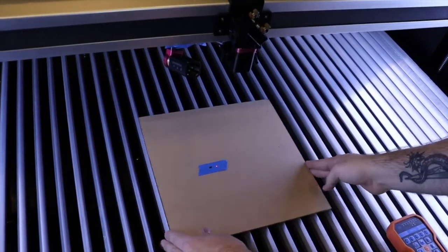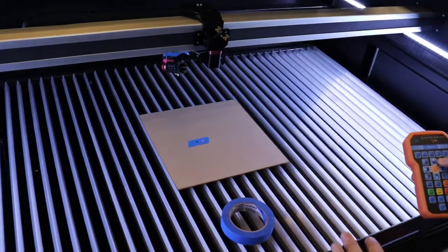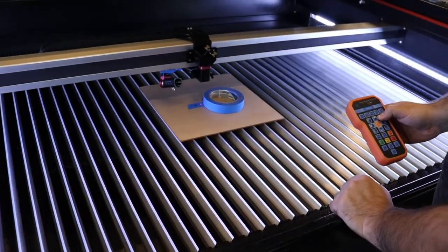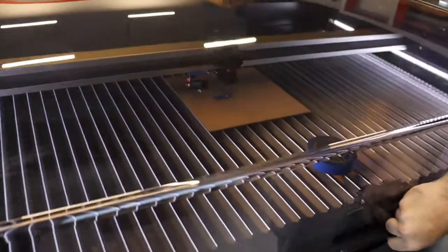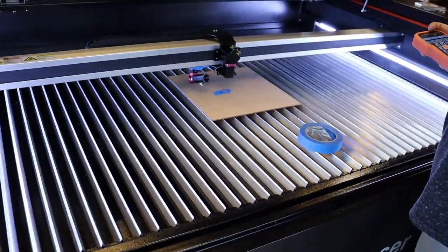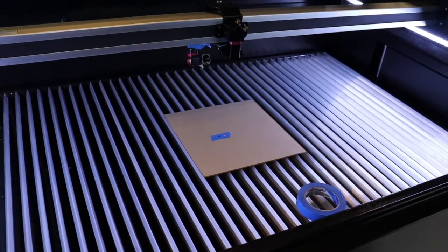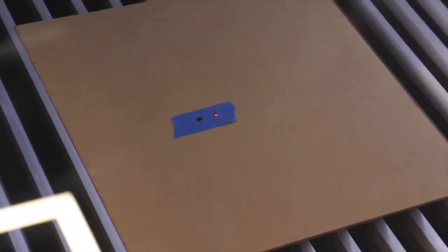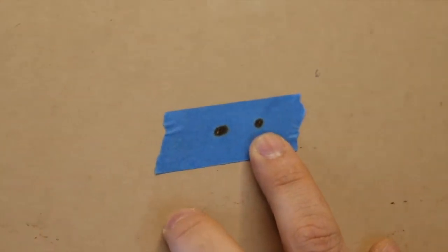Now we repeat the same thing that we did before. Raise the bed all the way up, close the lid and pulse. Then drop the bed all the way down, close the lid and pulse. Now we inspect the dots again. It is pretty parallel, looks good.